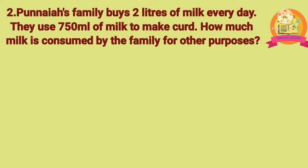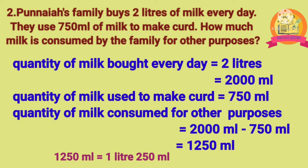Second problem: Purnaya's family buys 2 liters of milk every day. They use 750 ml of milk to make curd. How much milk is consumed for other purposes? Solution: quantity of milk bought is 2 liters, which equals 2000 ml. Quantity used to make curd is 750 ml. Quantity for other purposes is 2000 ml minus 750 ml, which equals 1250 ml, or 1 litre 250 ml.